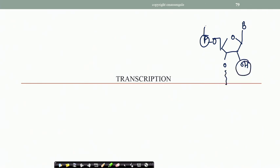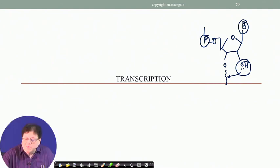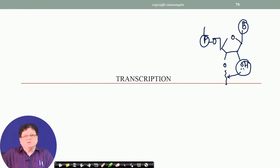One difference is that in RNA, thymine is replaced by uracil. Because of the presence of this 2 prime OH, RNAs are a little bit unstable as compared to their counterpart deoxyribonucleotides - that is, DNA. The reason is that this 2 prime OH can hydrolyze the phosphodiester bond by a process known as neighboring group participation, which is very common in organic reactions.